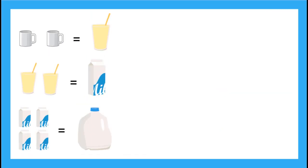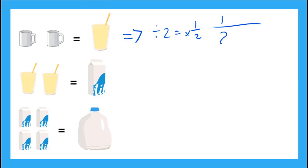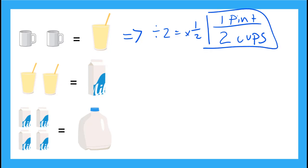Remember when we use these pictures to help us figure out our conversions — we can rewrite these as our conversion factors. So two cups is equal to one pint. If I have two cups and I'm converting to one pint, I have to divide by two, but dividing by two is the same as multiplying by one half. So this one half is actually one pint over two cups — this picture is saying this conversion factor.